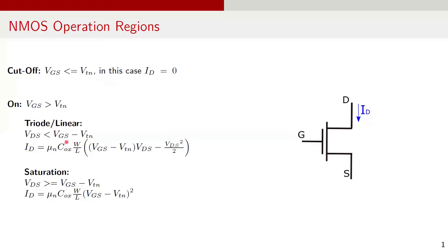The next two regions are active regions. When VGS, the voltage between gate and source, is more than the threshold voltage, a conducting channel forms between the source and drain and there is a current flow. Depending on the value of VDS, the voltage between drain and source, the active region can be classified as linear or triode region and saturation region. If VDS is less than VGS minus threshold voltage, the NMOS is in linear or triode region. The drain current in this region is given as mu_N * C_ox * (W/L) * (VGS - VTN) * VDS minus VDS squared by 2.